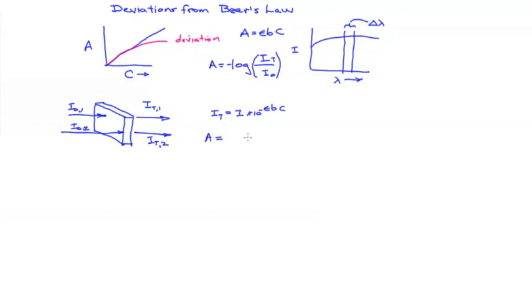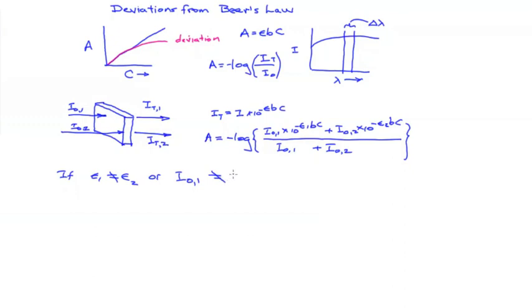The instrument is going to calculate the absorbance from the total transmitted intensity over the total incoming intensity at all the wavelengths. The problem is that this ratio does not converge to the linear relationship between absorbance and concentration. If either the molar absorptivities at the two wavelengths are not equal or the intensities going into the sample at the two wavelengths are not equal then this relationship does not converge or simplify to absorbance equals epsilon bc. And our calibration curve would look something like this.